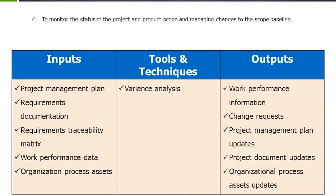The next stage is control scope — to monitor the status of the project and product scope and manage changes to the scope baseline. Inputs are the project management plan, requirements document, requirements traceability matrix, work performance data, and OPS. Variance analysis is the tool and technique. Outputs are work performance information, change requests, project management plan updates, project document updates, and OPE updates.